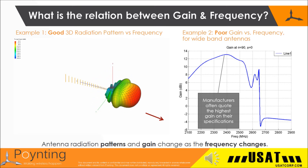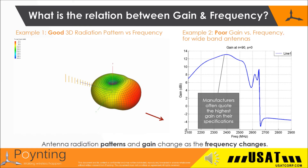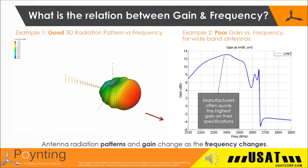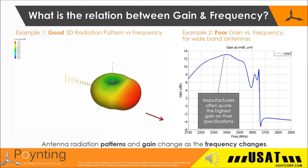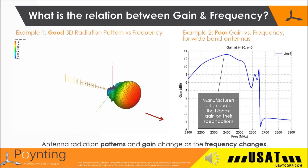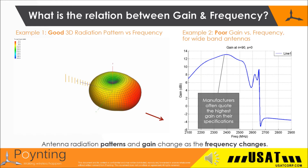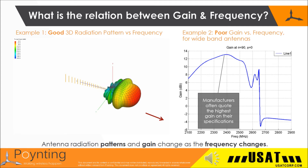In this example, at the chart at the upper right, the gain at 2100 MHz is 7 dBi and at 2400 MHz it is 13 dBi. That's a big delta in such a short distance of frequency span. And if the system were supposed to operate over those frequencies, you may have an issue in an edge coverage situation.